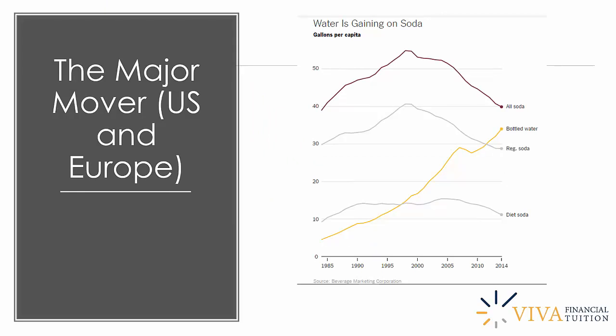A really illustrative graph shows how strongly the bottled water segment has come on in the last 15 to 20 years, looking from 1985 to 2014. Water is seriously gaining on soda — which is seeing considerable declines in per capita consumption — and looks set to overtake soda in terms of consumption. This really is a strong indication of the increasing health consciousness of consumers, which we'll be coming back to.